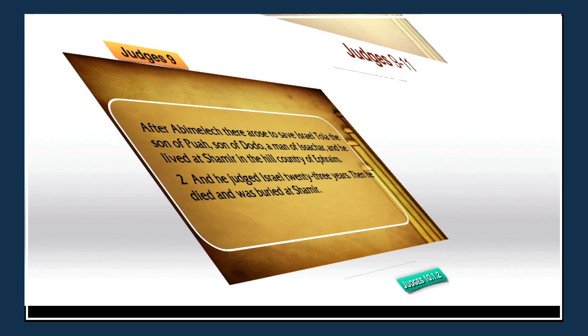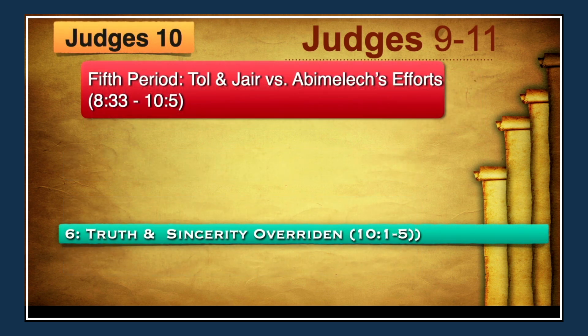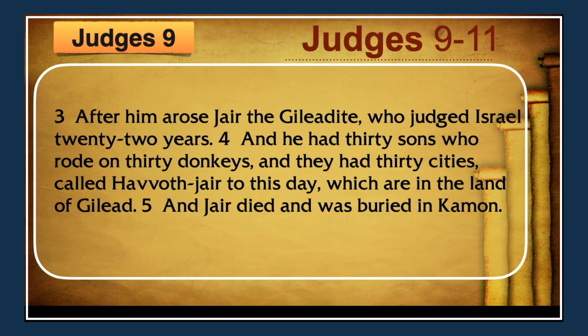Next we have Jair, the judge Jair, chapter 10, verse 3. After Tola arose Jair the Gileadite, who judged Israel 22 years. He had 30 sons who rode on 30 donkeys, and they had 30 cities called Havvoth-jair to this day, which are in the land of Gilead. Jair died and was buried in Kamon.